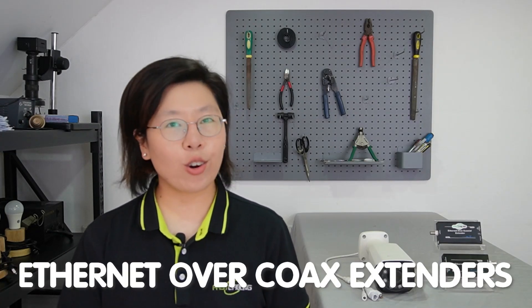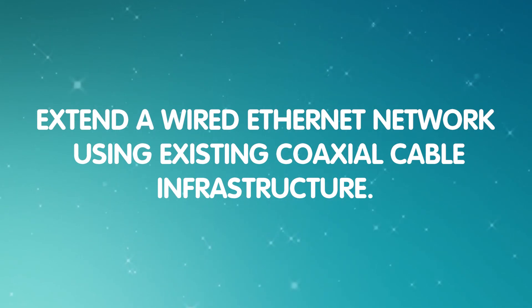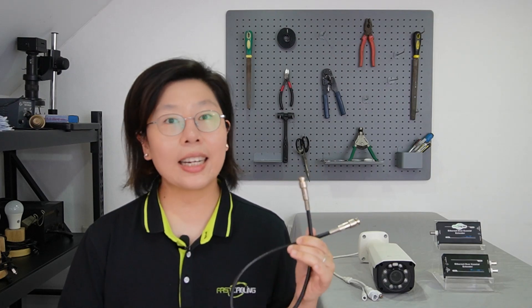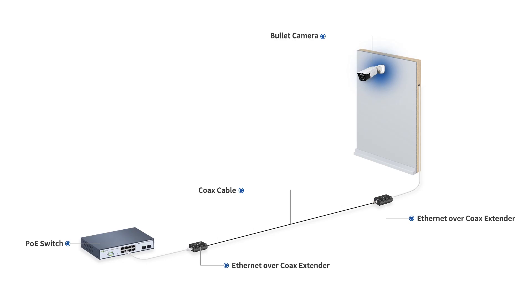Welcome back to your channel, Fast Cabling. Ethernet over coax extenders are innovative devices designed to extend a wired Ethernet network using existing coaxial cable infrastructure. Coaxial cables, commonly used for cable television and broadband internet, can carry data signals effectively. Ethernet over coax extenders leverage this existing coaxial wiring to transmit Ethernet data signals, allowing users to expand their wired network without the need for additional Ethernet cables.